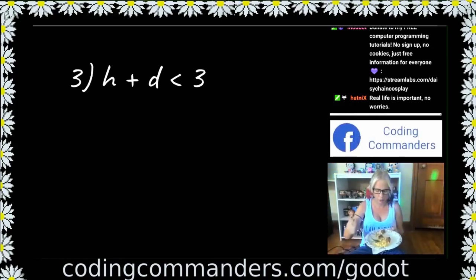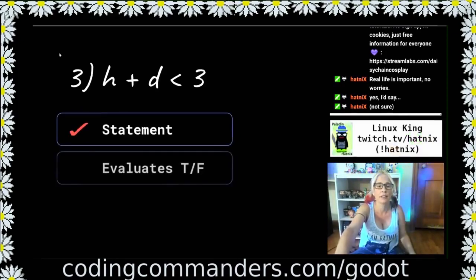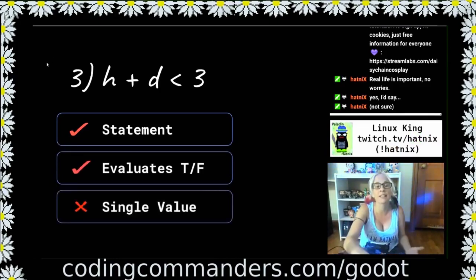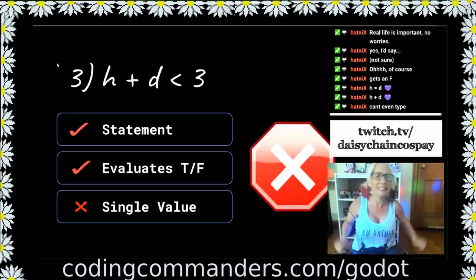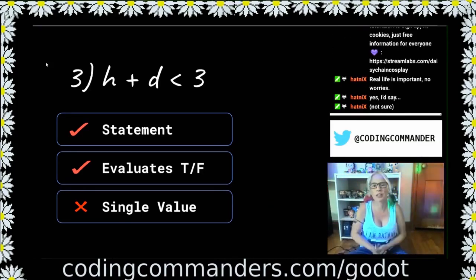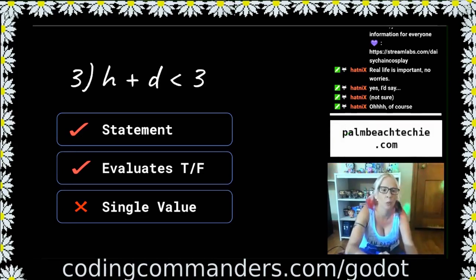While I wait, I will eat some bratwurst with egg salad. It is a statement. It does evaluate true or false. But it doesn't have only one single truth value because depending on what H and D are equal to, it could be true or false. So this is not a proposition. If H is negative two and D is negative one, then it would be true. But if H was four and D was six, it would be false. So that's why it's not a proposition.